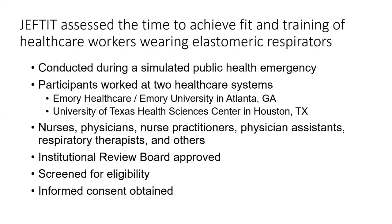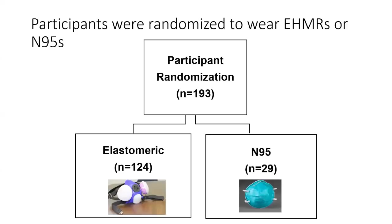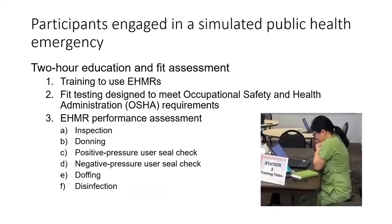Participants were randomized to wear either the elastomeric respirator or the N95 during Jet Fit. 124 participants were randomized into the elastomeric group, while 29 were randomized into the N95 group. Participants engaged in a two-hour simulated public health emergency in which they were rapidly trained to use their respirator and fit tested. For the elastomeric group, performance was assessed in six key areas: inspection, donning, positive pressure user seal check, negative pressure user seal check, doffing, and disinfection.